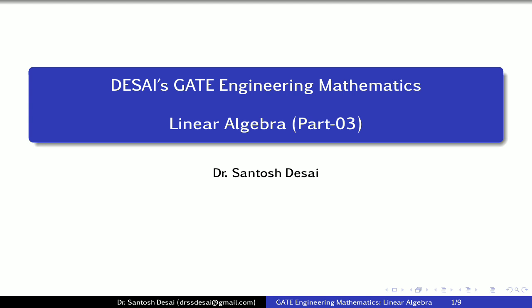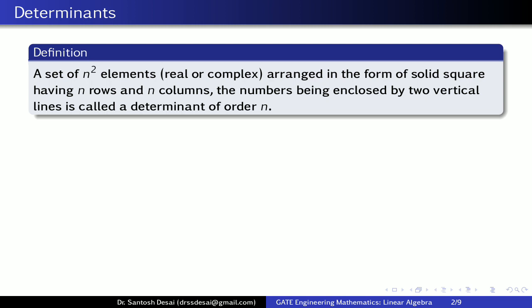Everybody knows how to expand a determinant, but how to expand it within a minute — that is what I am going to discuss here. So let us first define what is meant by a determinant. A determinant is a set of n square elements; elements may be real or complex, arranged in the form of a square having n rows and n columns, with the numbers enclosed by two vertical lines. That arrangement is called a determinant.